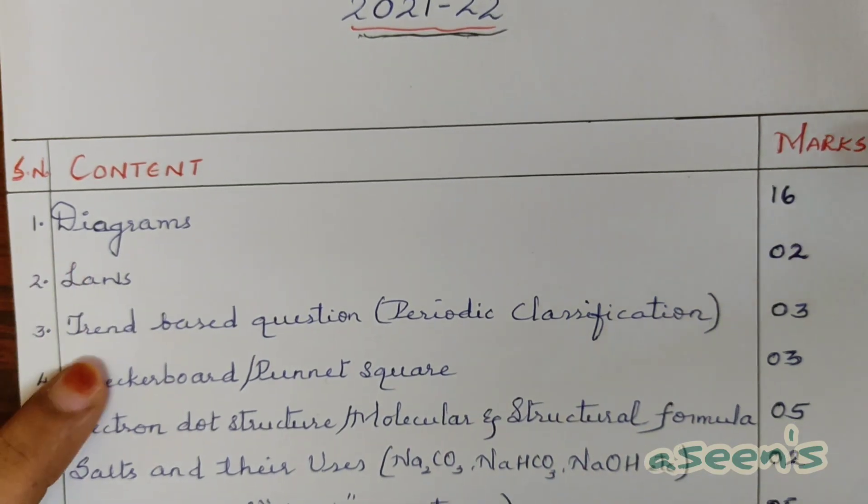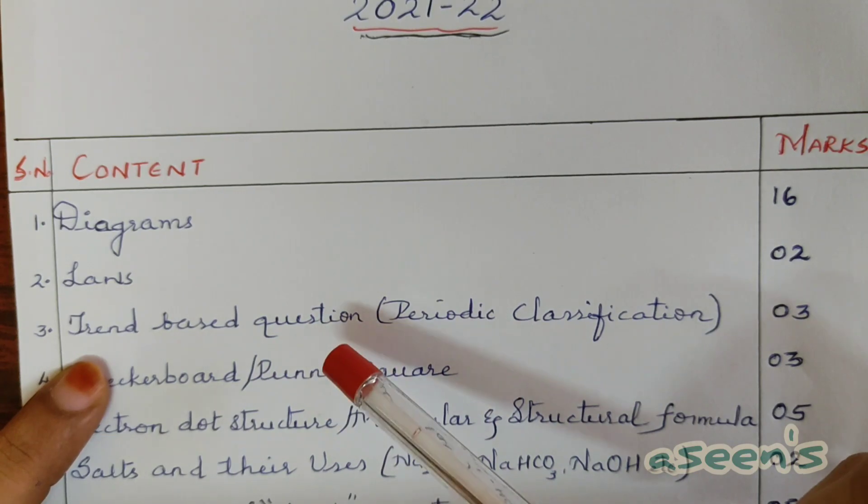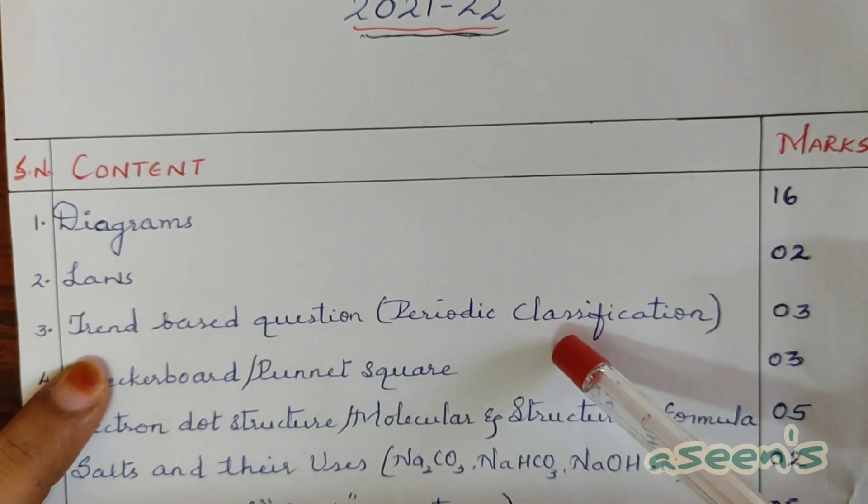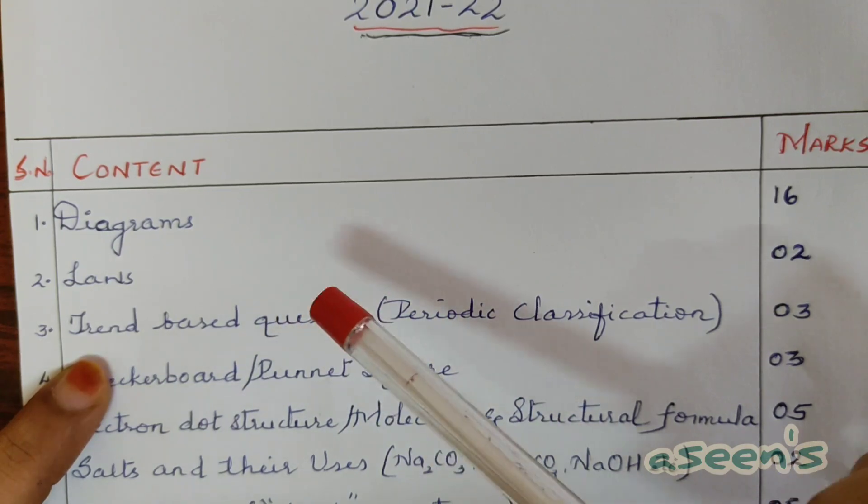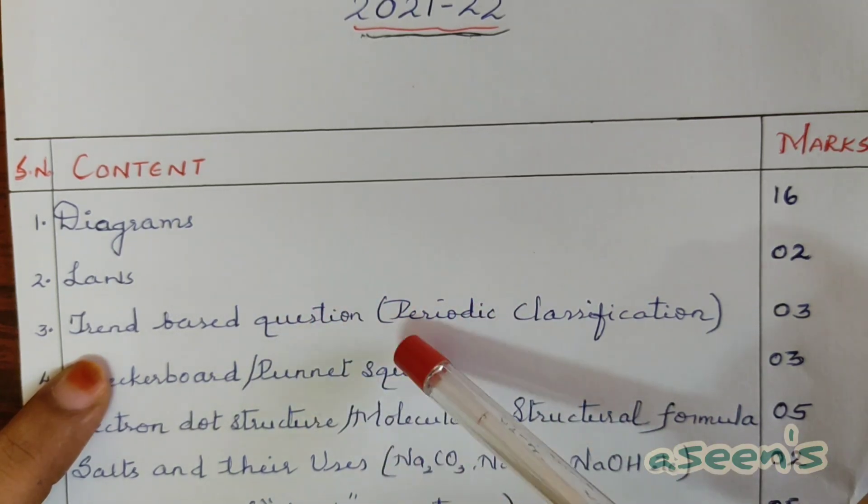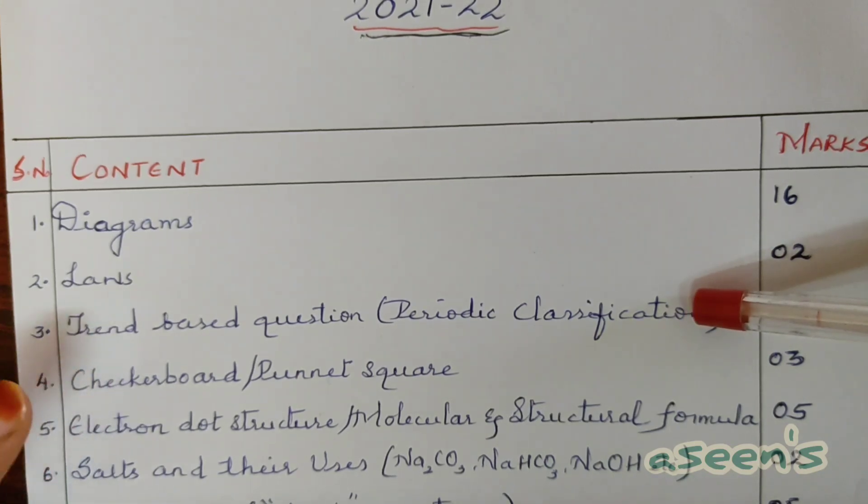Next comes trend-based questions for the periodic table trend from the chapter periodic classification. Every year this has been a tradition, so they give a three-mark question related to this. How to solve this and identify these trends in an easy way - I've already given the link for this particular video in the description box.